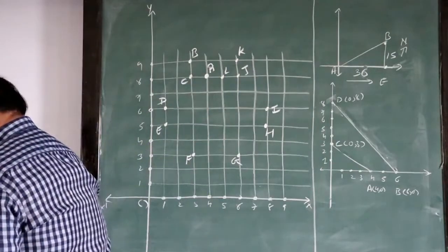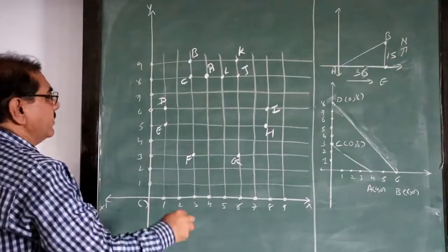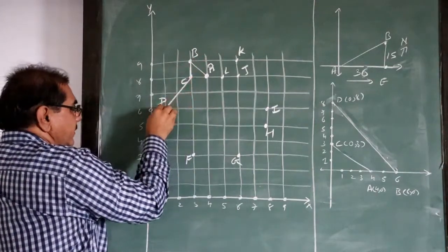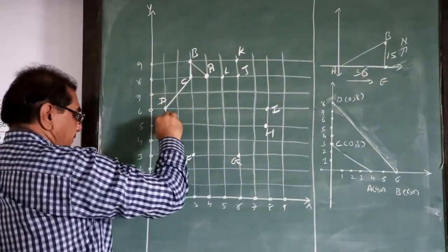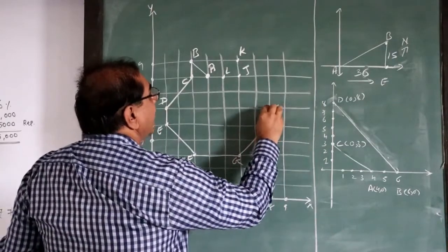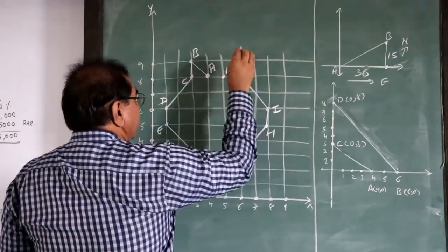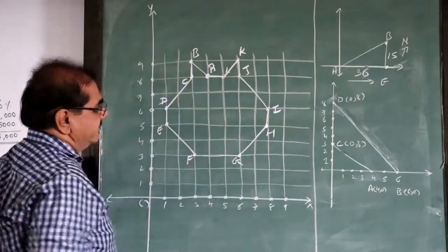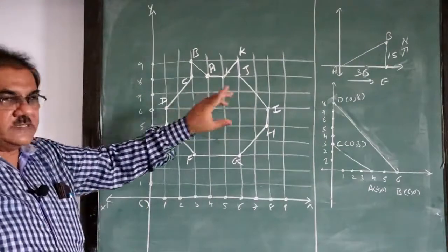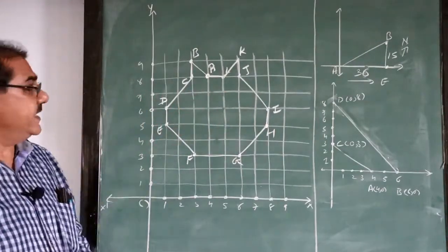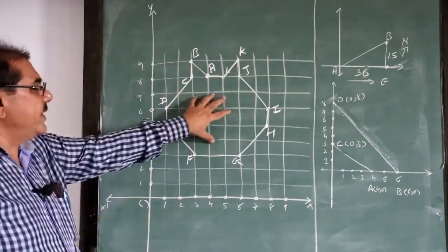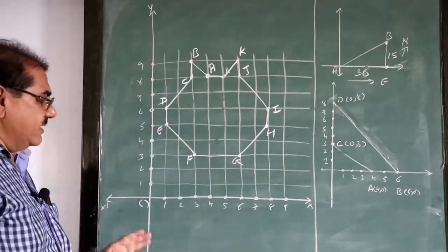I have to connect them in order: A to B to C to D to E to F to G to H to I to J to K to L and back to A. Can you assume what kind of figure is developed here? According to me, it is the line-out diagram of our artificial satellite Aryabhata, if you remember it. It is my view — your view can be different — but according to me it looks like the outline of Aryabhata, the artificial satellite of India.